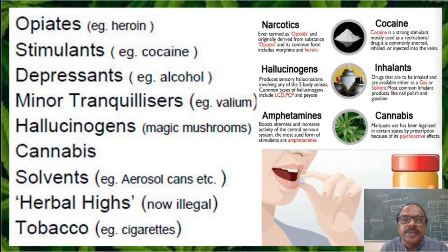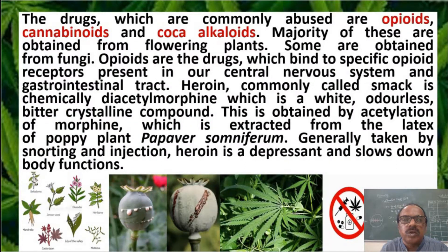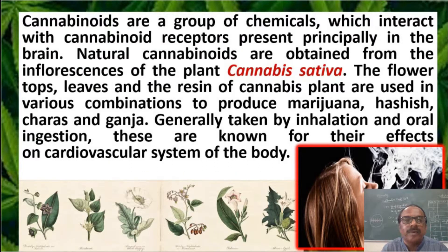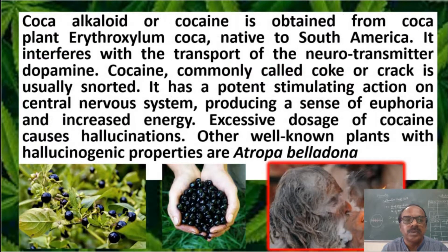These are the different types of narcotic drugs available in the market. The drugs commonly abused are opioids, cannabinoids, and coca alkaloids. Opioids are drugs obtained from the plant Papaver somniferum, commonly called heroin or smack. Cannabinoids are extracted from Cannabis sativa and bind to cannabinoid receptors in the central nervous system. Coca alkaloids, also known as cocaine, are obtained from the coca plant Erythroxylum coca and are commonly called crack.